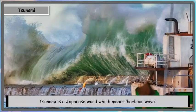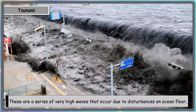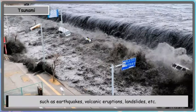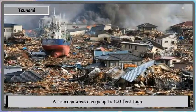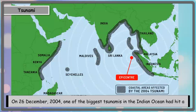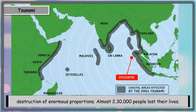Tsunami is a Japanese word which means harbor wave. A tsunami is an extremely large wave in the sea that occurs due to disturbance on the ocean floor such as an earthquake, volcanic eruption, landslides, etc. A tsunami wave can go up to 100 feet high and travel up to 450 miles per hour. On 26th December 2004, one of the biggest tsunamis in the Indian Ocean hit a number of countries in Southeast Asia, including India, causing enormous damage and destruction. Almost 2,30,000 people lost their lives.